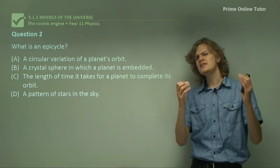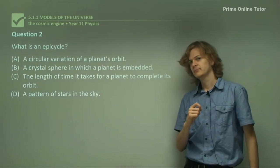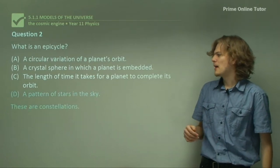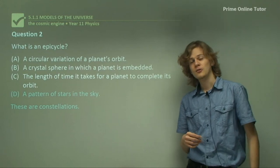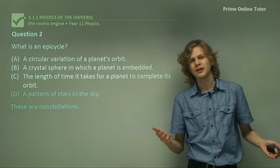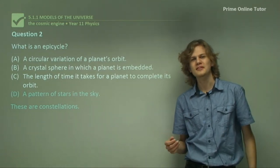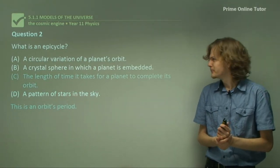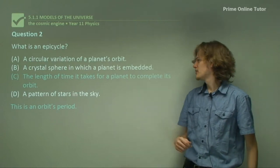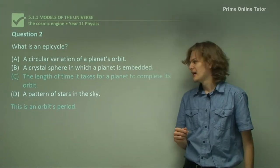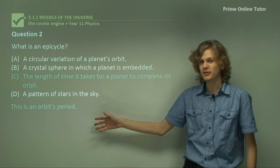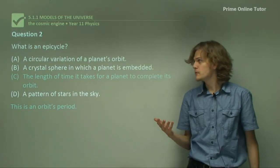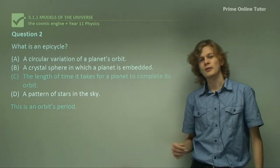Question 2. What is an epicycle? We have a few options here. Is it D, a pattern of stars in the sky? Well, that's not right. That's a constellation. I'm sure you know plenty of constellations. Scorpio, Leo, Gemini. Let's look at our other options then. C, the length of time it takes for a planet to complete its orbit. Well, this is the orbit's period, which is somewhat related to the period of things moving in circular motion. So this is not an epicycle either.